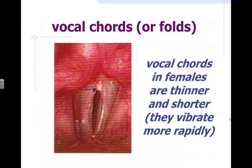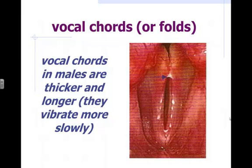Women have thinner and shorter vocal folds, which causes them to vibrate more rapidly, producing a higher-pitched voice — ranging from soprano to alto. Men have thicker and longer vocal cords, which produces a deeper voice. This is why men have a larger voice box and a more prominent Adam's apple. Someone with a very low bass voice has the thickest and longest vocal folds, just like the lowest strings on a piano, harp, or guitar.